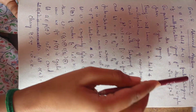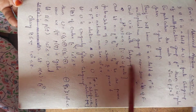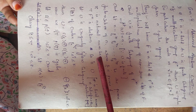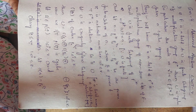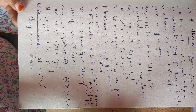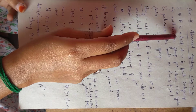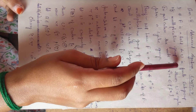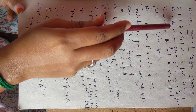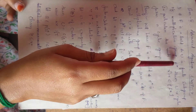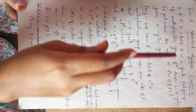Now we are starting Unit 4, which contains the most important theorem for this course. The theorem states: if f is a field and u is a finite subgroup of the multiplicative group f*, then u is cyclic.